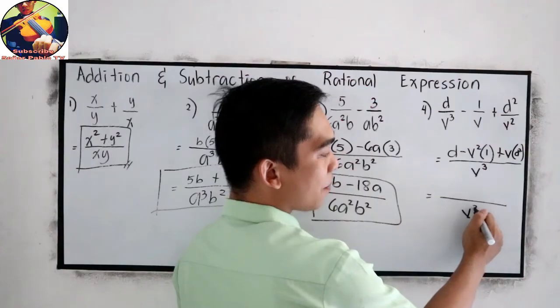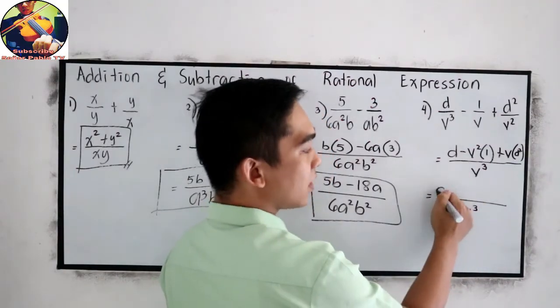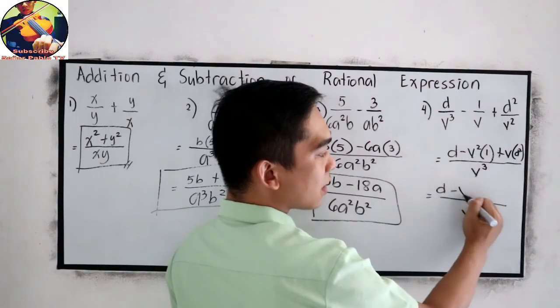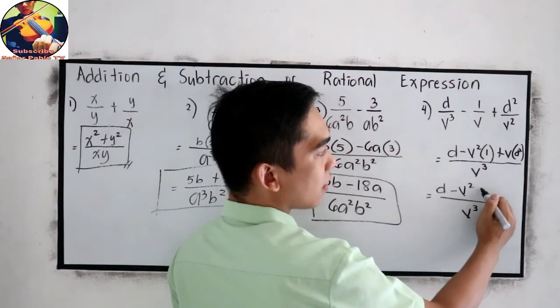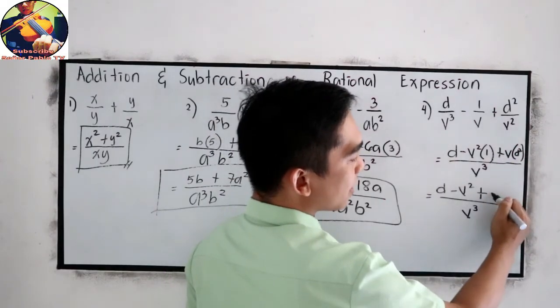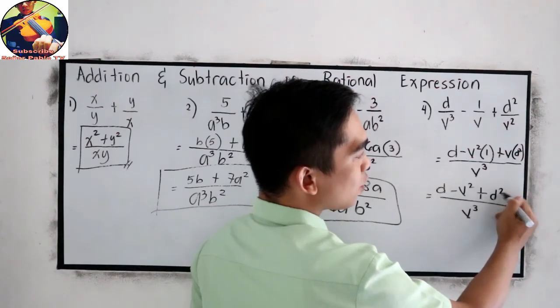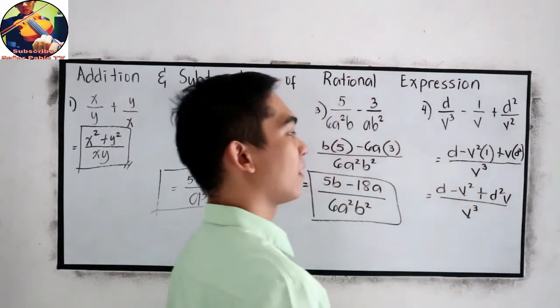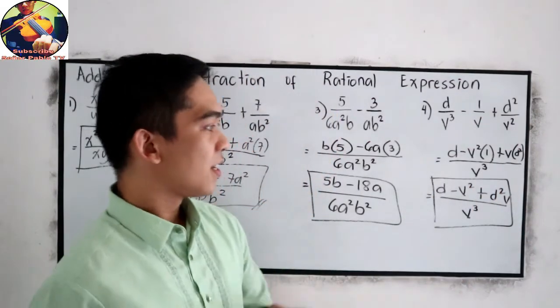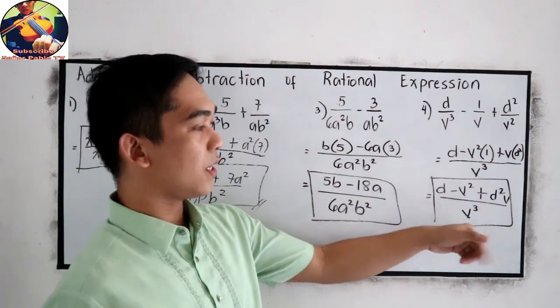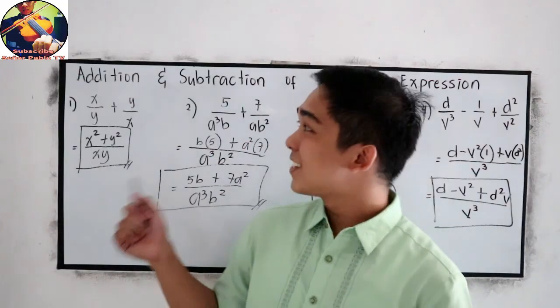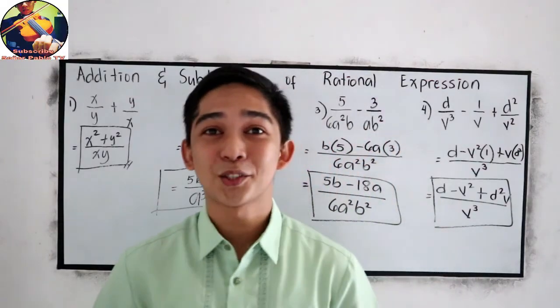Now, we have common denominator, simplify, d minus negative v squared times 1, v squared, plus v times d squared, vd squared. This is now our final answer. d minus v squared plus d squared v all over v cubed. So, that is the addition and subtraction of rational expressions.